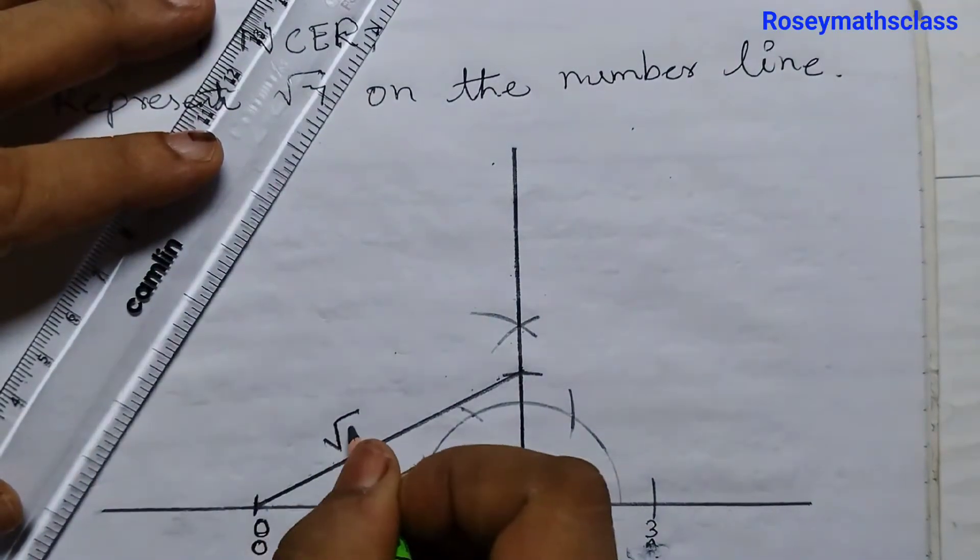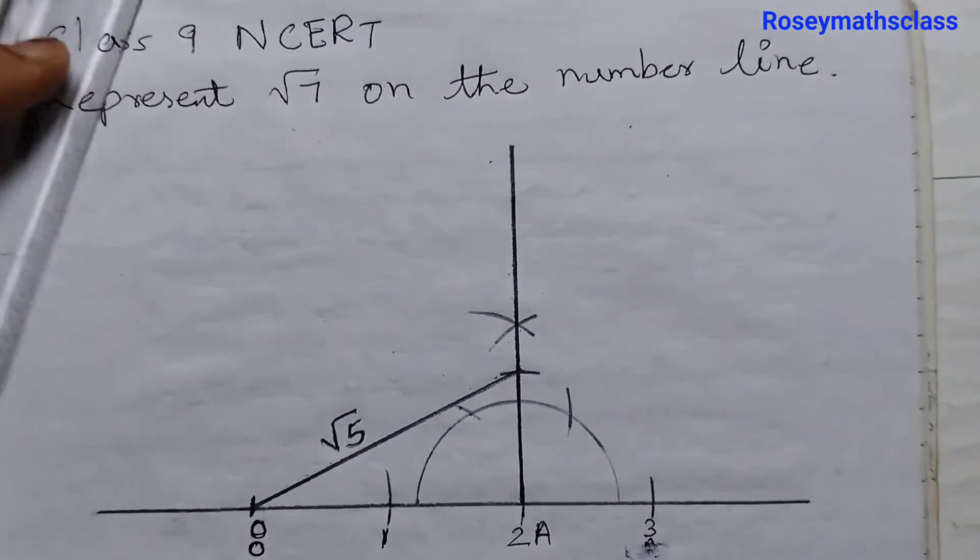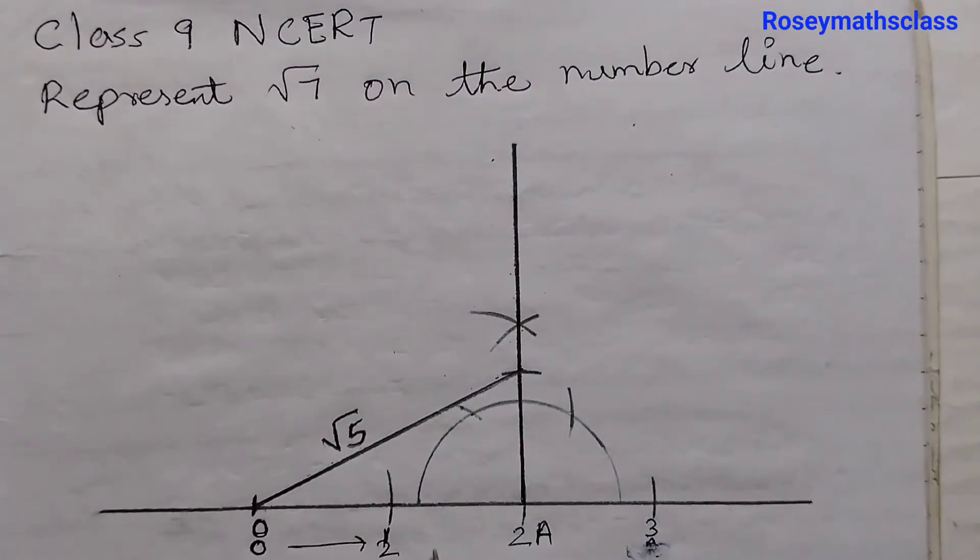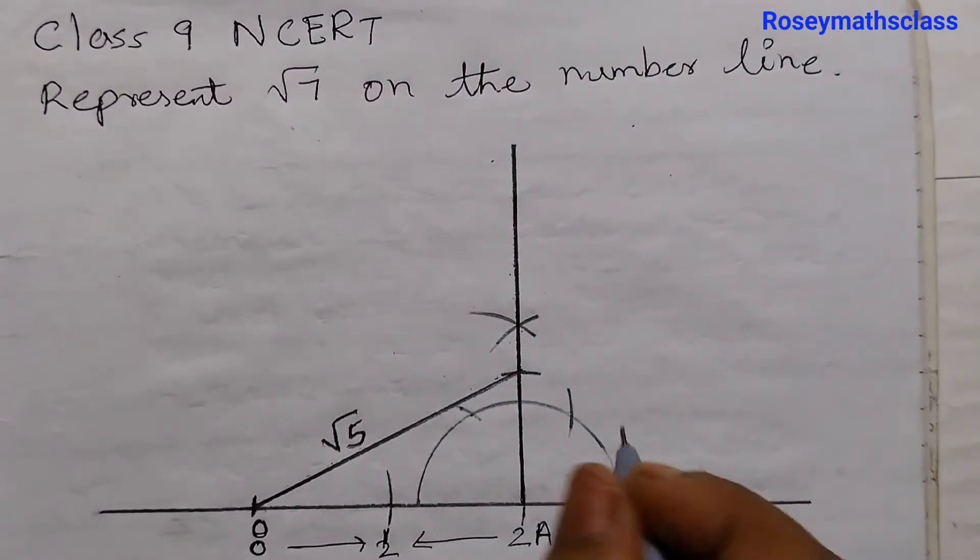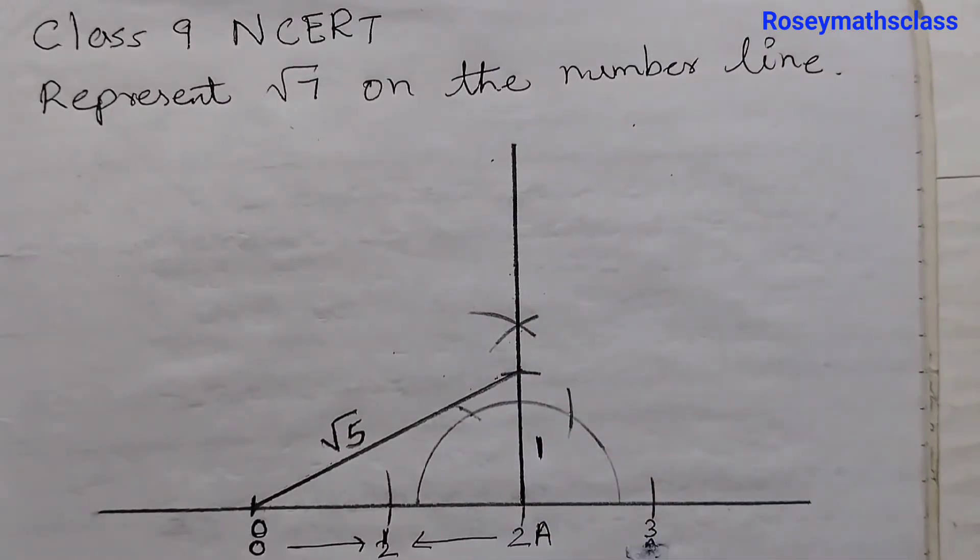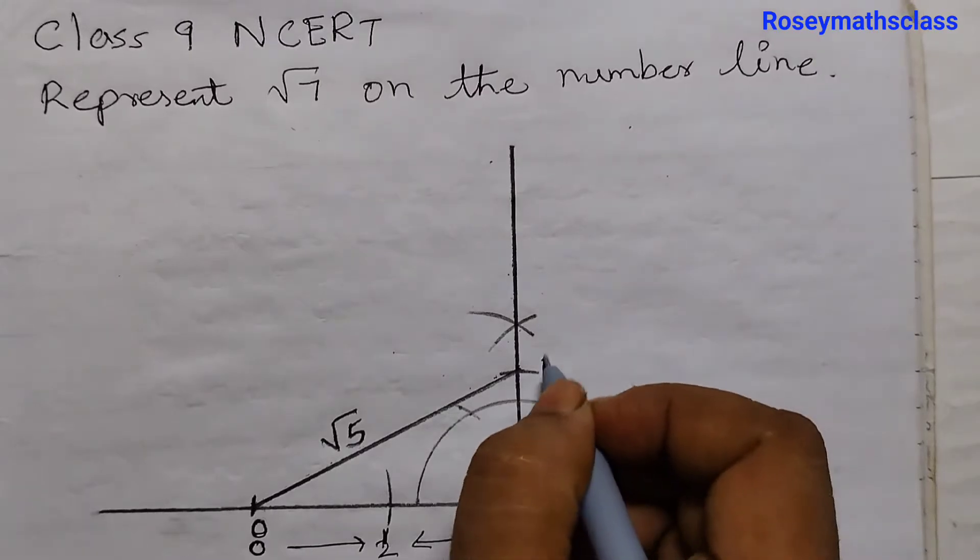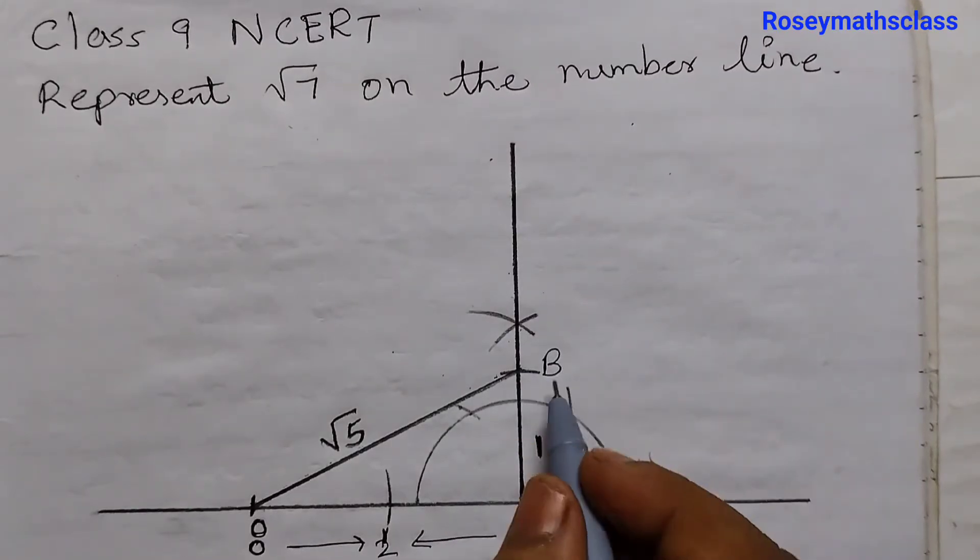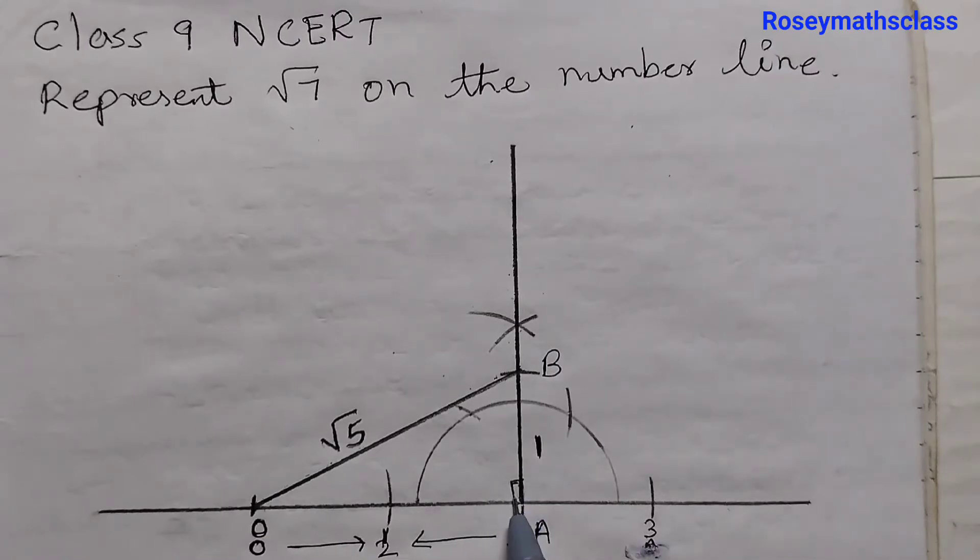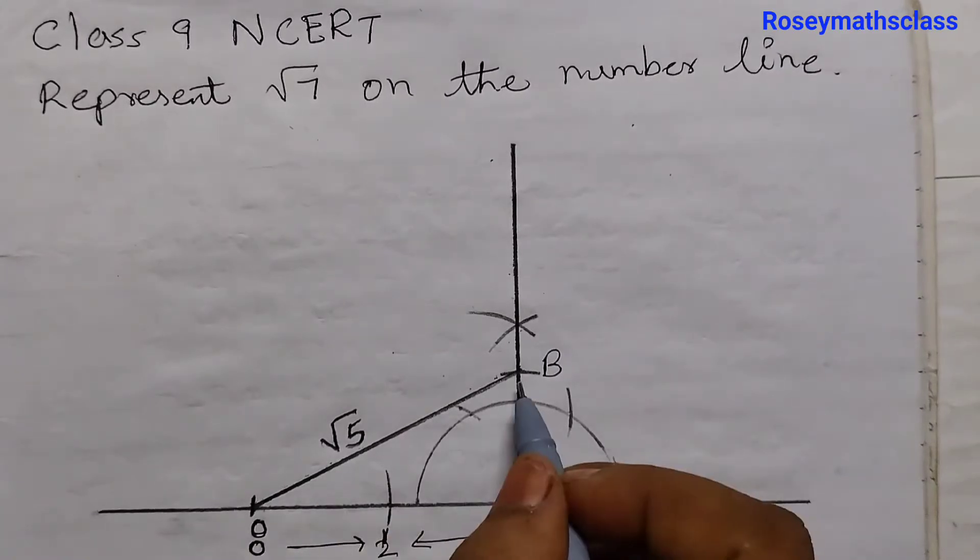So join these two points now. This distance is square root of 5. This is 2 units, this distance is 1 unit. So using Pythagorean theorem, let's label this as B. OAB is a right angle triangle and using Pythagorean theorem, we can prove that this is square root of 5.